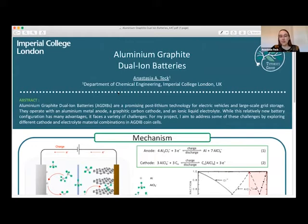AGDIBs are a type of non-aqueous rechargeable aluminium battery, and they're very interesting as potential alternatives or supplements to lithium-ion batteries and other battery technologies.